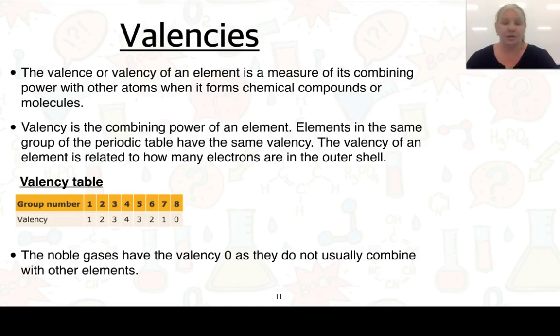The next thing that we're going to look at: the valency of an element is a measure of its combining power with another atom when it's forming chemical compounds or molecules. Elements in the same group of the periodic table will have the same valency, and the valency of an element is related to how many electrons are in that outer or valence shell.